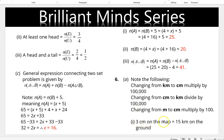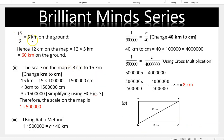For the scale on a map: 3 cm on the map equals 15 km on the ground. Dividing: 1 cm = 5 km, so 12 cm = 60 km on the ground. To express as a ratio, convert 15 km to centimeters by multiplying by 100,000: 3 cm to 1,500,000 cm. Using HCF of 3, the scale simplifies to 1:500,000.